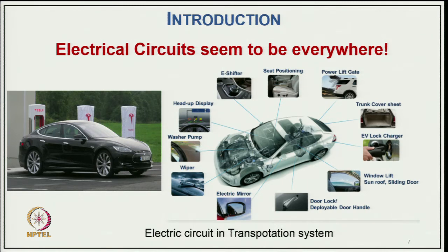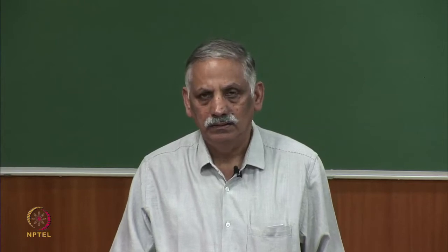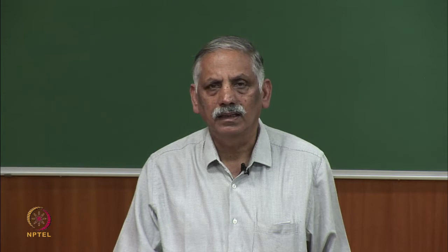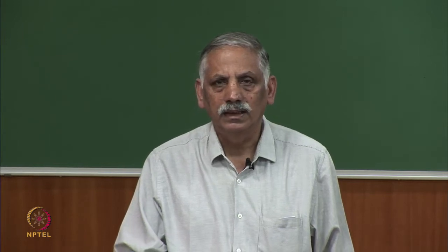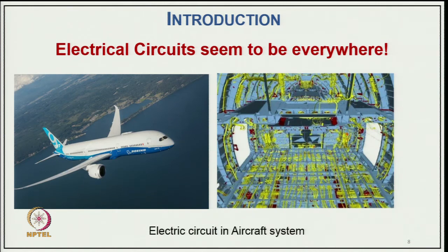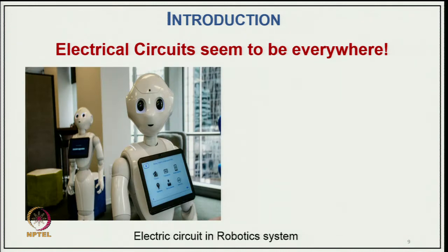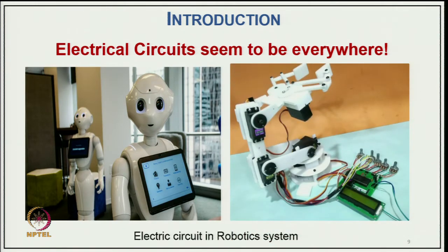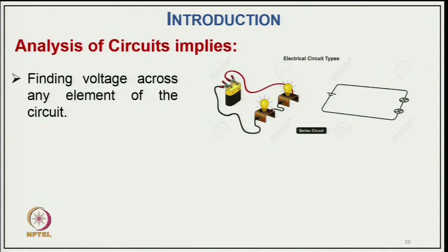There are a number of circuits connected to the same battery in an electric vehicle. The electric circuit is also present in aircraft systems, which consist of a total console, and in robotic systems including the robotic arm and different parts of robotics.